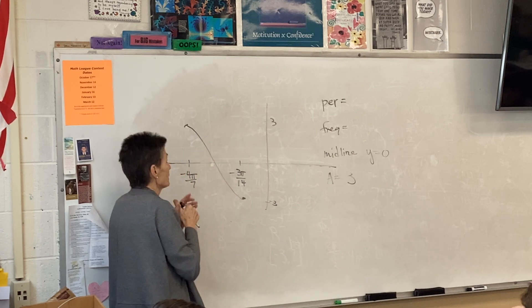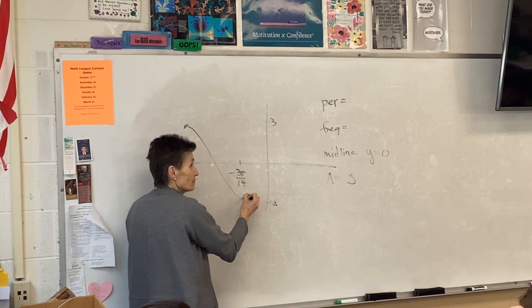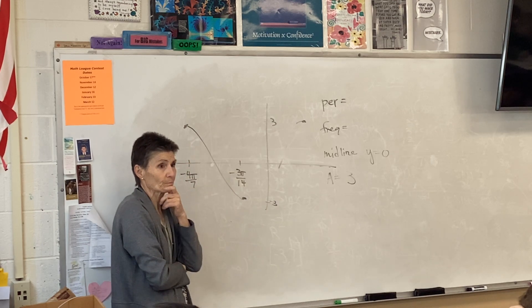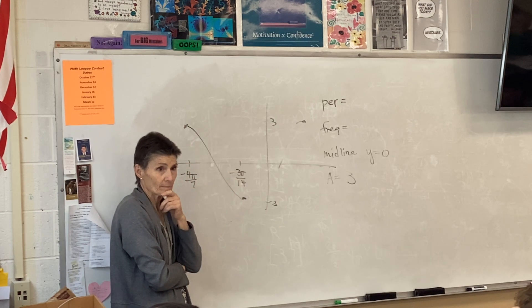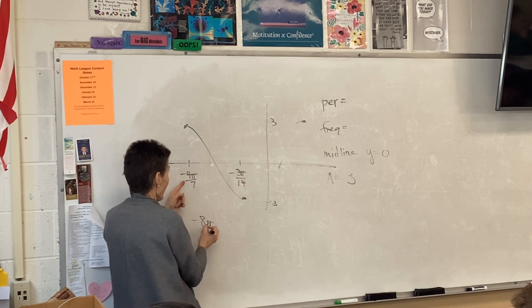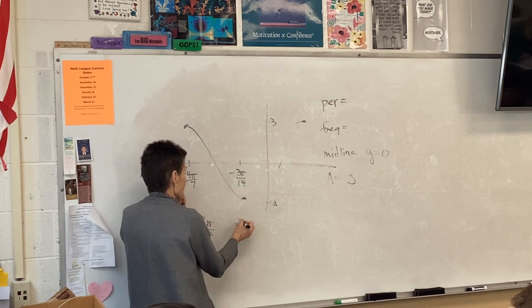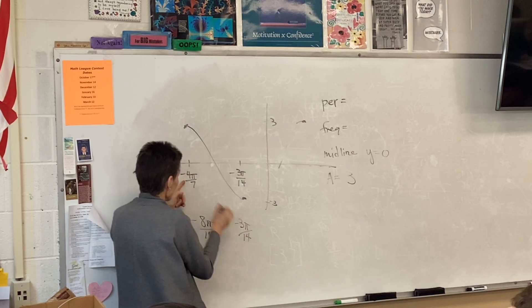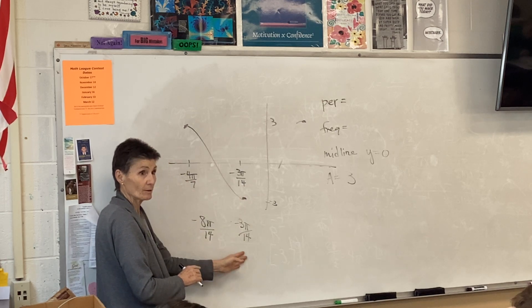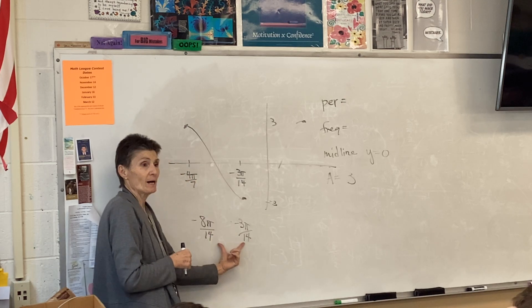Alright? Now, we know that max to min is half the period, right? So we gotta get from negative 8π over 14 to negative 3π over 14. I have to compare these two numbers, so I'm getting a common denominator.